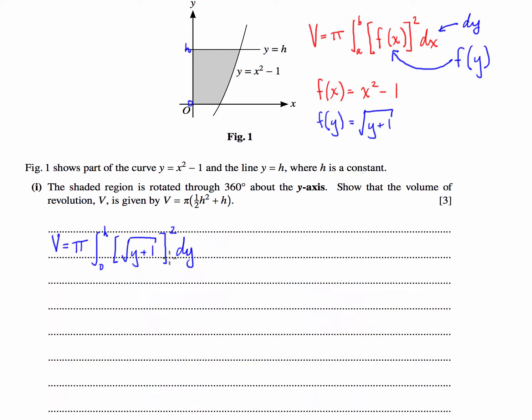So hopefully you guys are aware as well that the square root and the square will end up cancelling each other out. So what we will get is this is going to be equal to pi times the integral from 0 to h of y plus 1 dy.